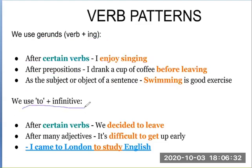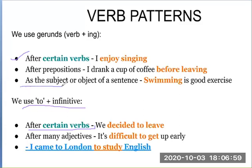The next pattern is the to-infinitive. It is used after certain verbs, like gerunds. For example: We decided to leave. It is also used after many adjectives — for example: It's difficult to get up early. The to-infinitive can also act as the object or subject of a sentence, such as: I come to London to study.